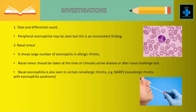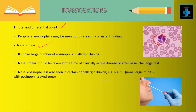Now let's see the investigations for allergic rhinitis. First, total and differential counts — peripheral eosinophilia may be seen but this is an inconsistent finding. Next, nasal smears will show large numbers of eosinophils in allergic rhinitis and should be taken at the time of clinically active disease or after nasal challenge test. Nasal eosinophilia is also seen in certain non-allergic rhinitis, e.g., NARS — non-allergic rhinitis with eosinophilia syndrome.